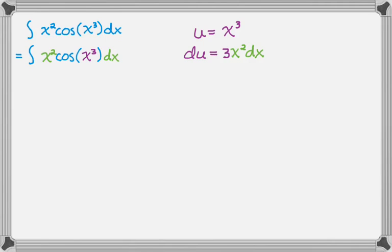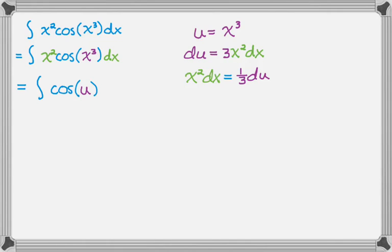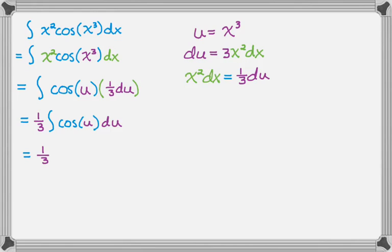In the original problem I have an x squared and a dx, so I want to solve for that quantity: x squared dx is 1/3 du. Rewriting the integral, it'll be cosine of u — since x cubed is u — and then x squared dx is 1/3 du, so the whole thing is in terms of u. Pulling out the 1/3, the antiderivative of cosine is sine of u, so we get 1/3 sine of u plus c. And since u is x cubed, the answer is 1/3 sine of x cubed plus c.